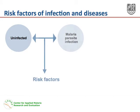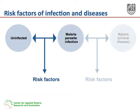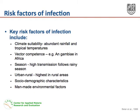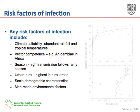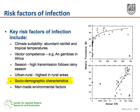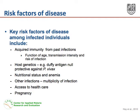We will focus on the common risk factors of acquiring a malaria parasite infection, as well as the risk factors of malaria disease. It is important to note that malaria parasite infections do not always lead to clinical disease. Key risk factors of infection include climate suitability in the form of abundant rainfall and tropical temperatures, vector competence, seasonality with a high transmission season typically following the rainy season, urban and rural residents with rural populations at the highest risk, and socio-demographic characteristics, as well as man-made environmental factors.